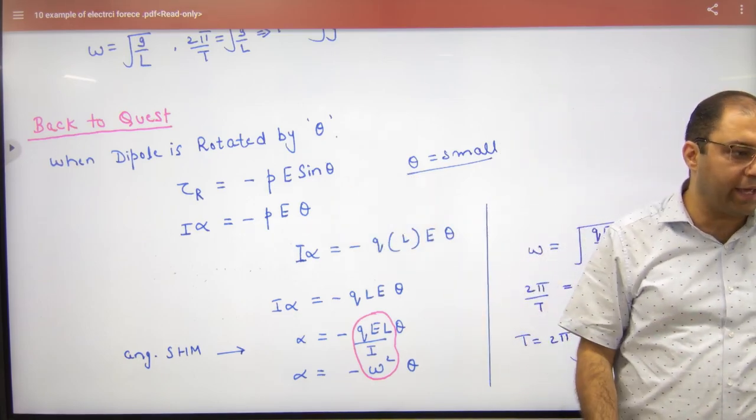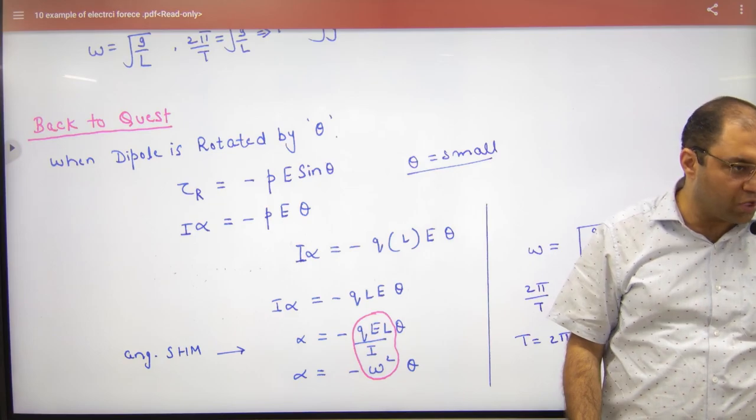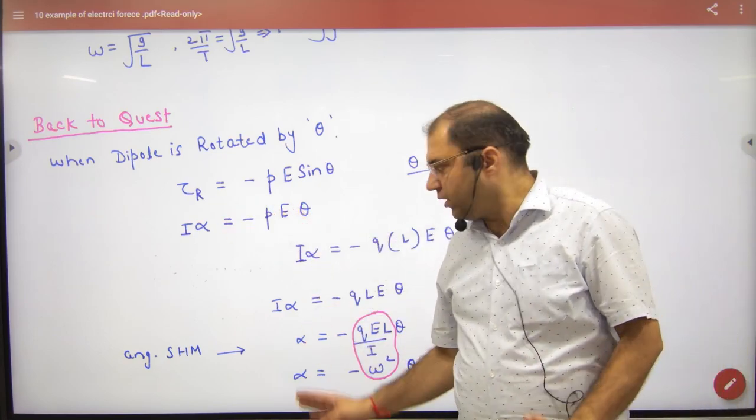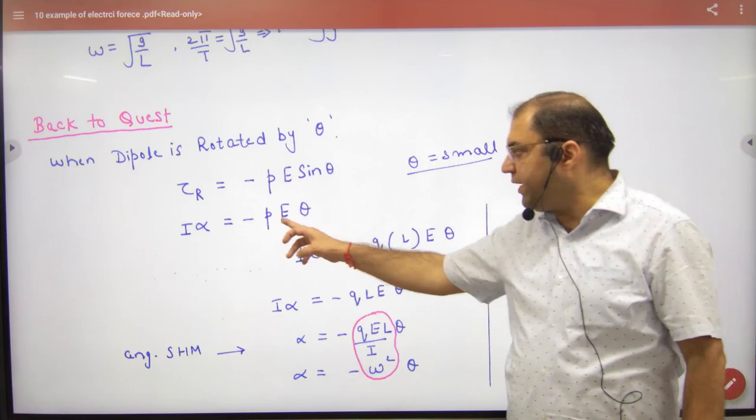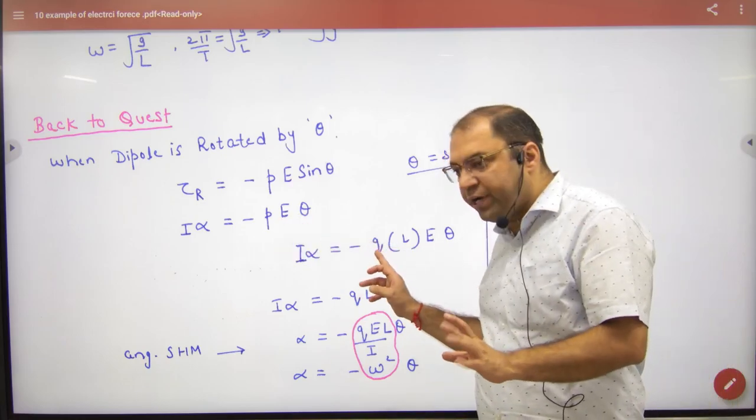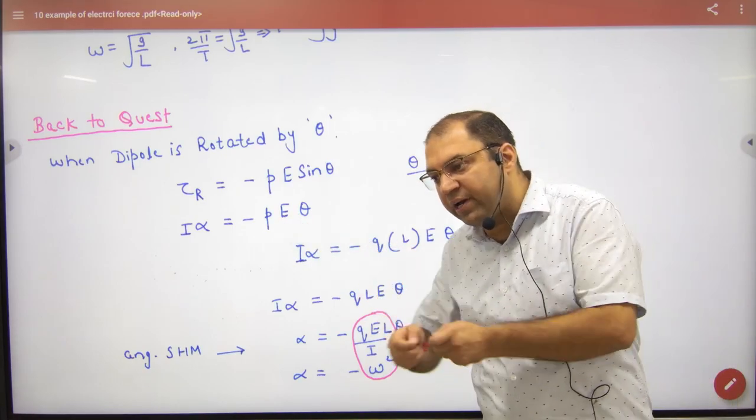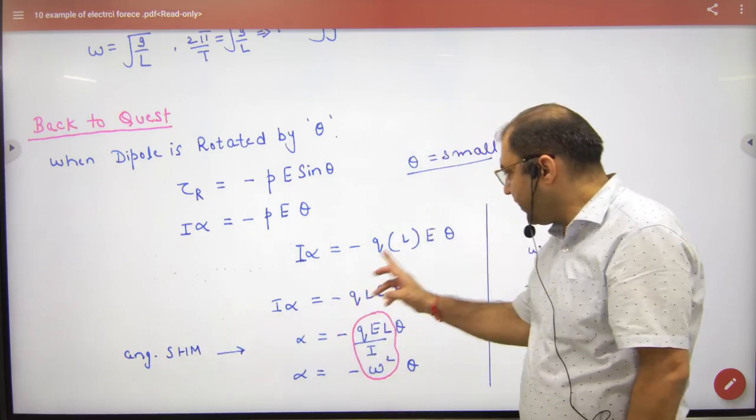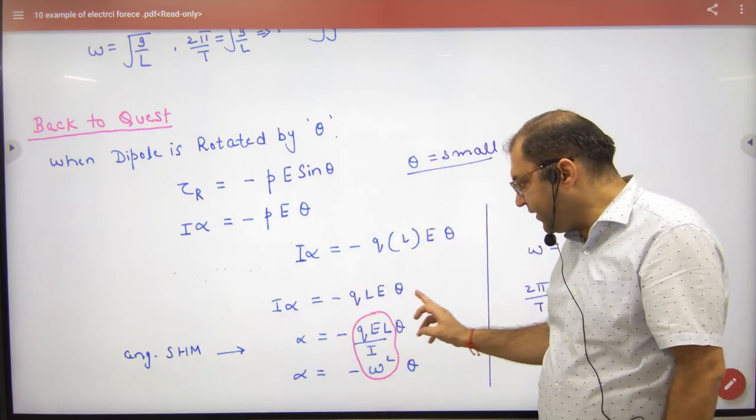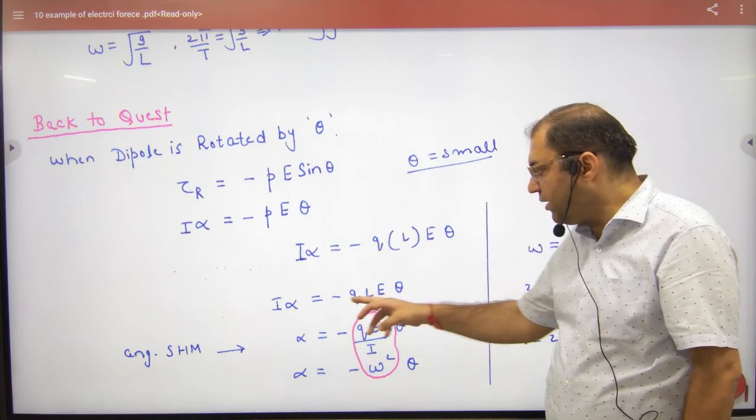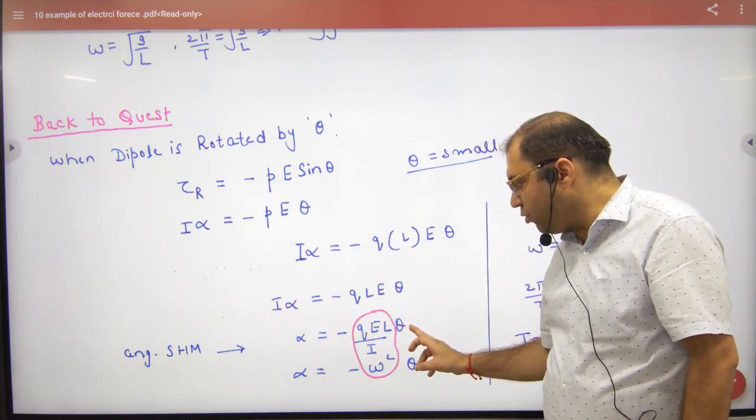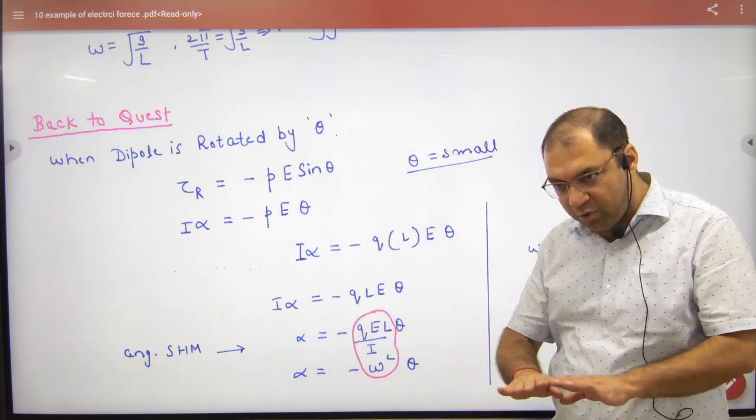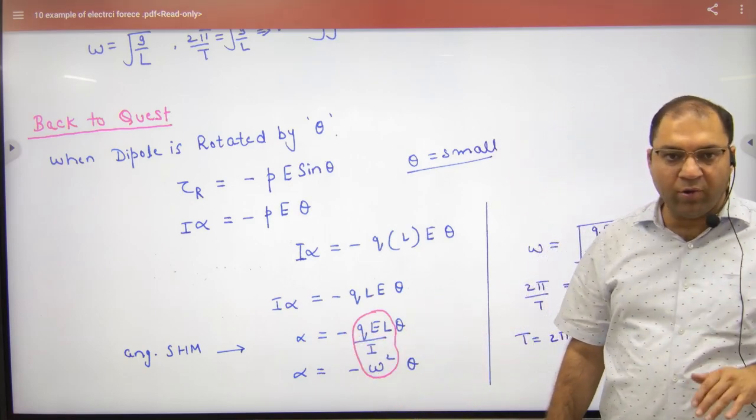And what is torque? I times alpha from rotational motion. Torque equals I alpha. And P, what is dipole moment? Q into 2A. But here the length is L. So Q into L. Put this in. Take the I from below. So alpha is proportional to theta with negative sign. So this is angular SHM.